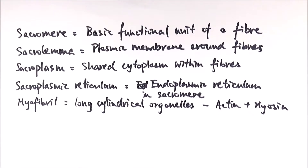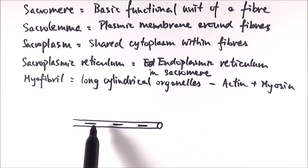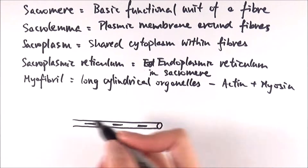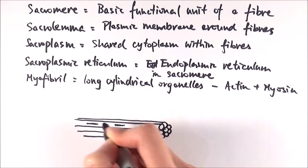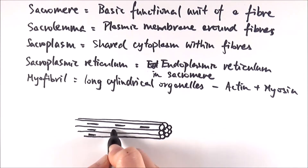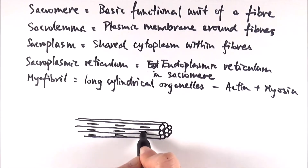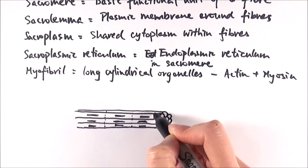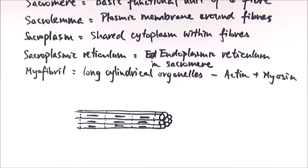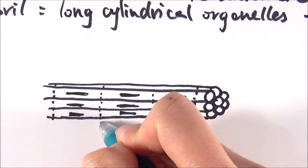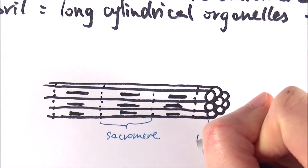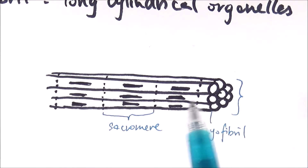Looking at how these different parts are organized: a myofibril is made up of actin distributed throughout and myosin forming the darker, thicker bands. These myofibrils are packed together like sticks, each with myosin and actin distributed throughout. They can be separated by what we call a z-line, and each section between z-lines is one sarcomere — a single functional unit.